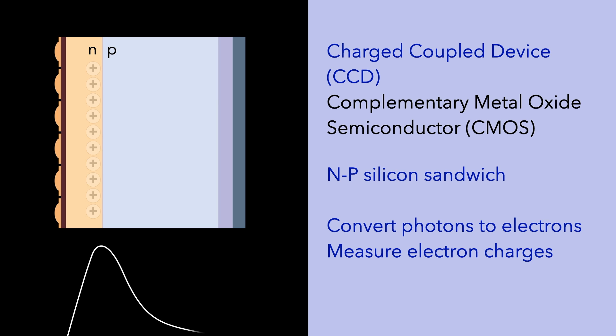This zone of slightly more positive charge will be important in measuring the electron charges that are produced when the sensor is exposed to radiation. The CMOS or CCD chip converts photons to electrons and provides a way for these electrons to be measured so that they can represent the pattern of photon attenuation and make a radiographic image.